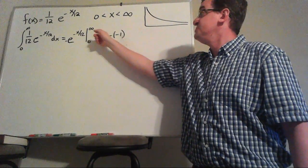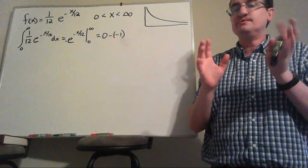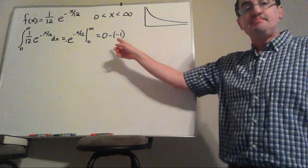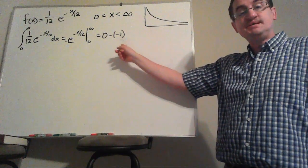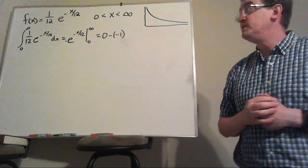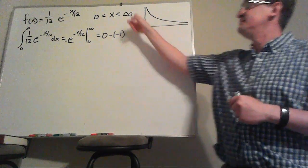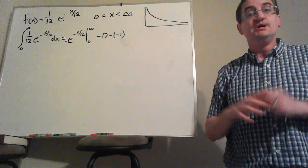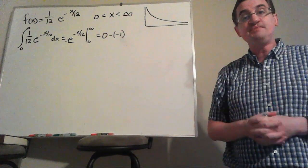And in this case, when you plug in infinity, e to the negative infinity, your math teacher would say you've got to take a limit, but you're going to get 0 minus the negative 1. So yes, it integrates to 1. Yes, for all positive values of x, you're going to get a positive result. So this counts as a genuine PDF.